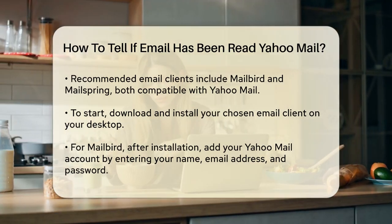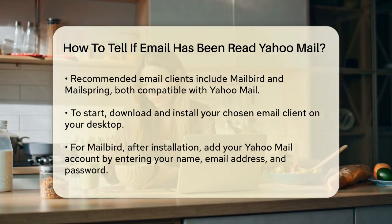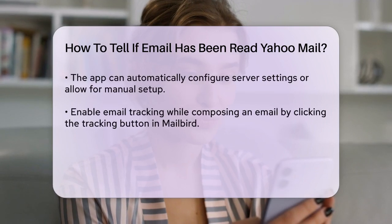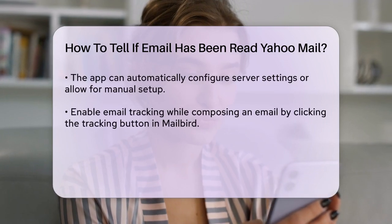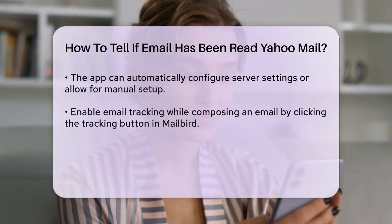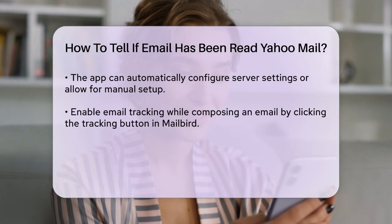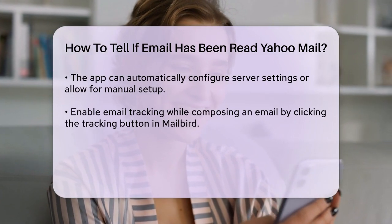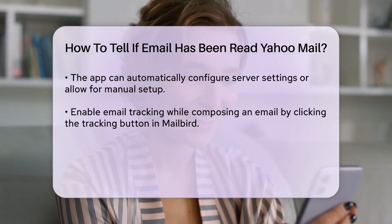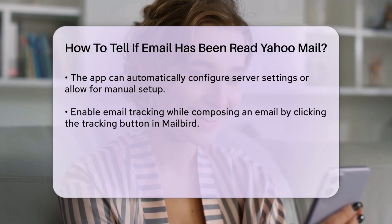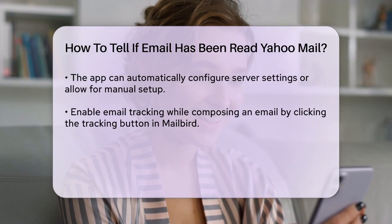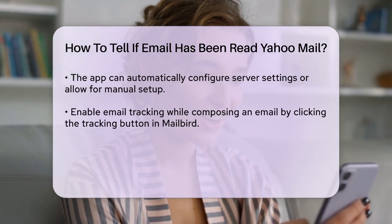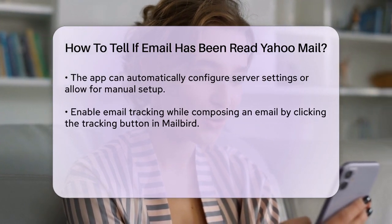Once your account is set up, you can enable email tracking when composing an email. In Mailbird, for instance, you'll find an email tracking button next to the send button in the compose window. Click on this button to enable tracking for that specific email. You can also set this as a default function in the composing menu.